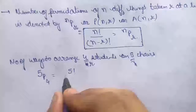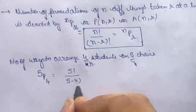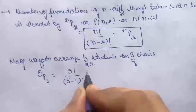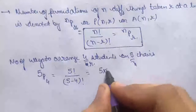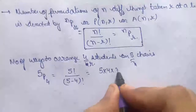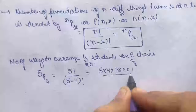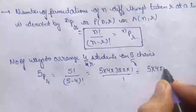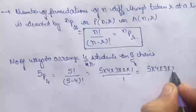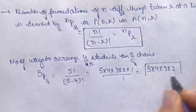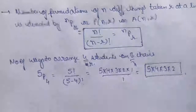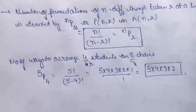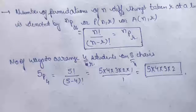So the number of permutations of n different things taken r at a time is nPr = n! / (n−r)!. For our example: number of ways to arrange 4 students on 5 chairs — n = 5, r = 4 — so 5P4 = 5! / (5−4)! = 5×4×3×2×1 / 1 = 5×4×3×2.